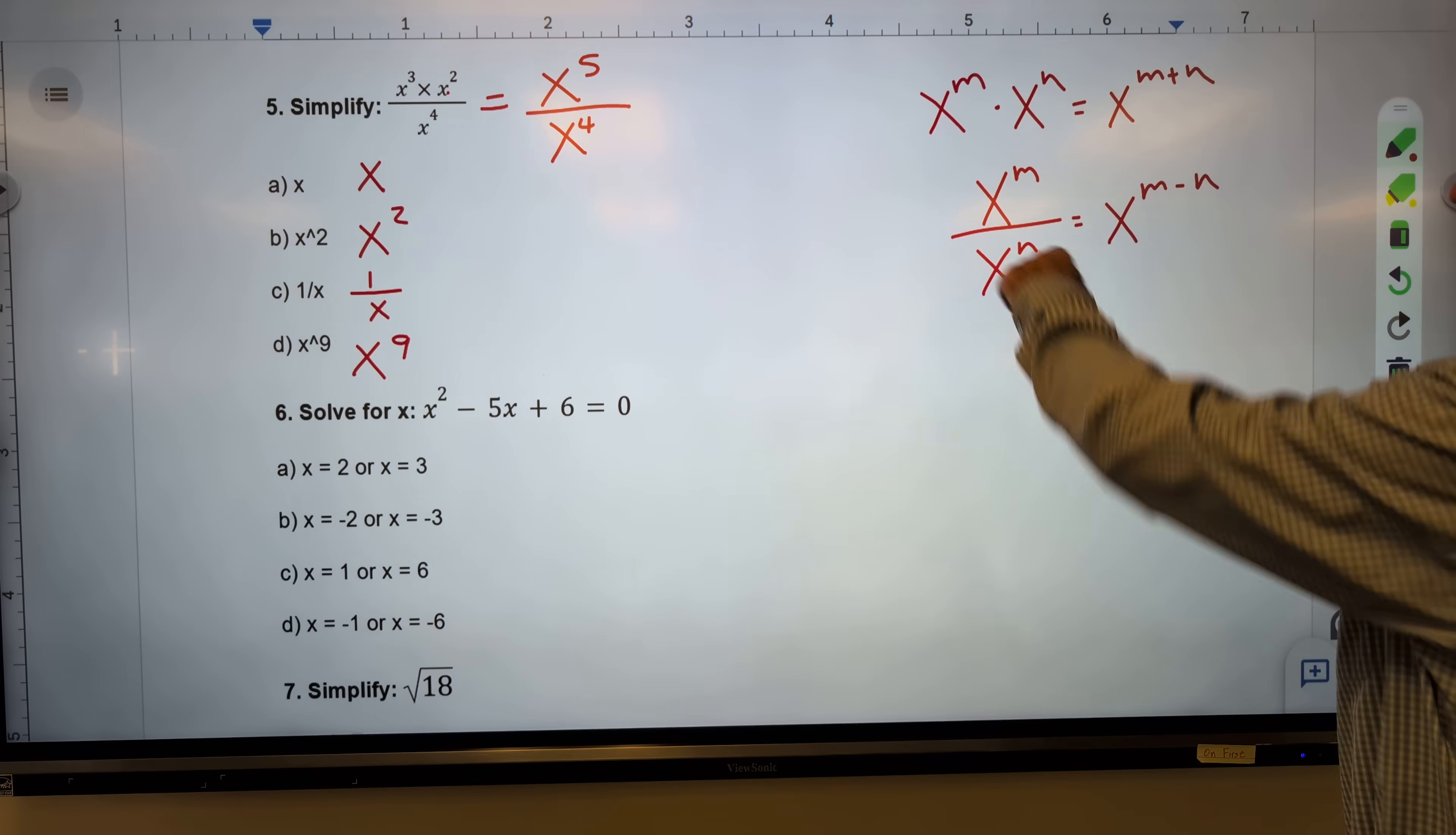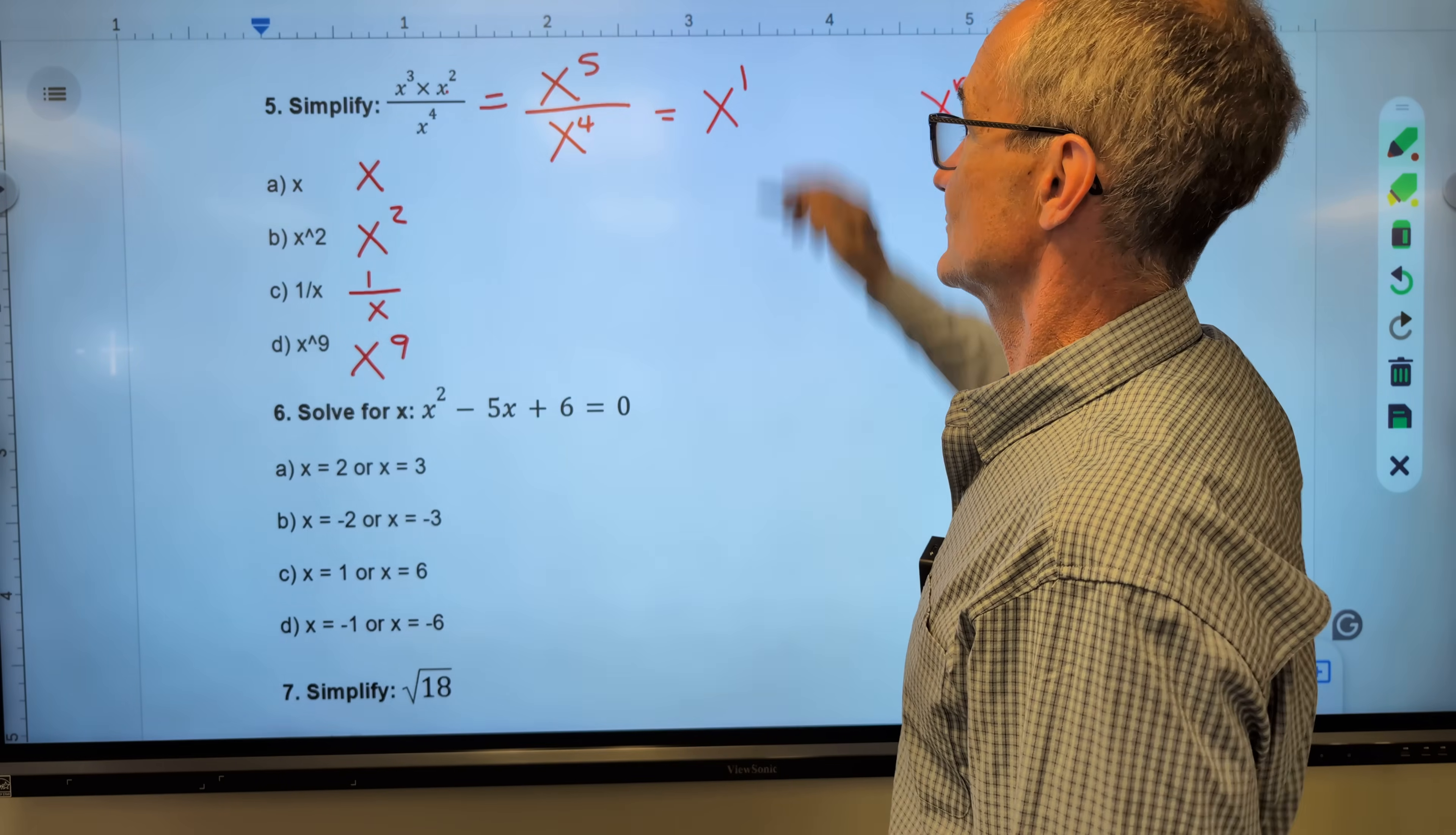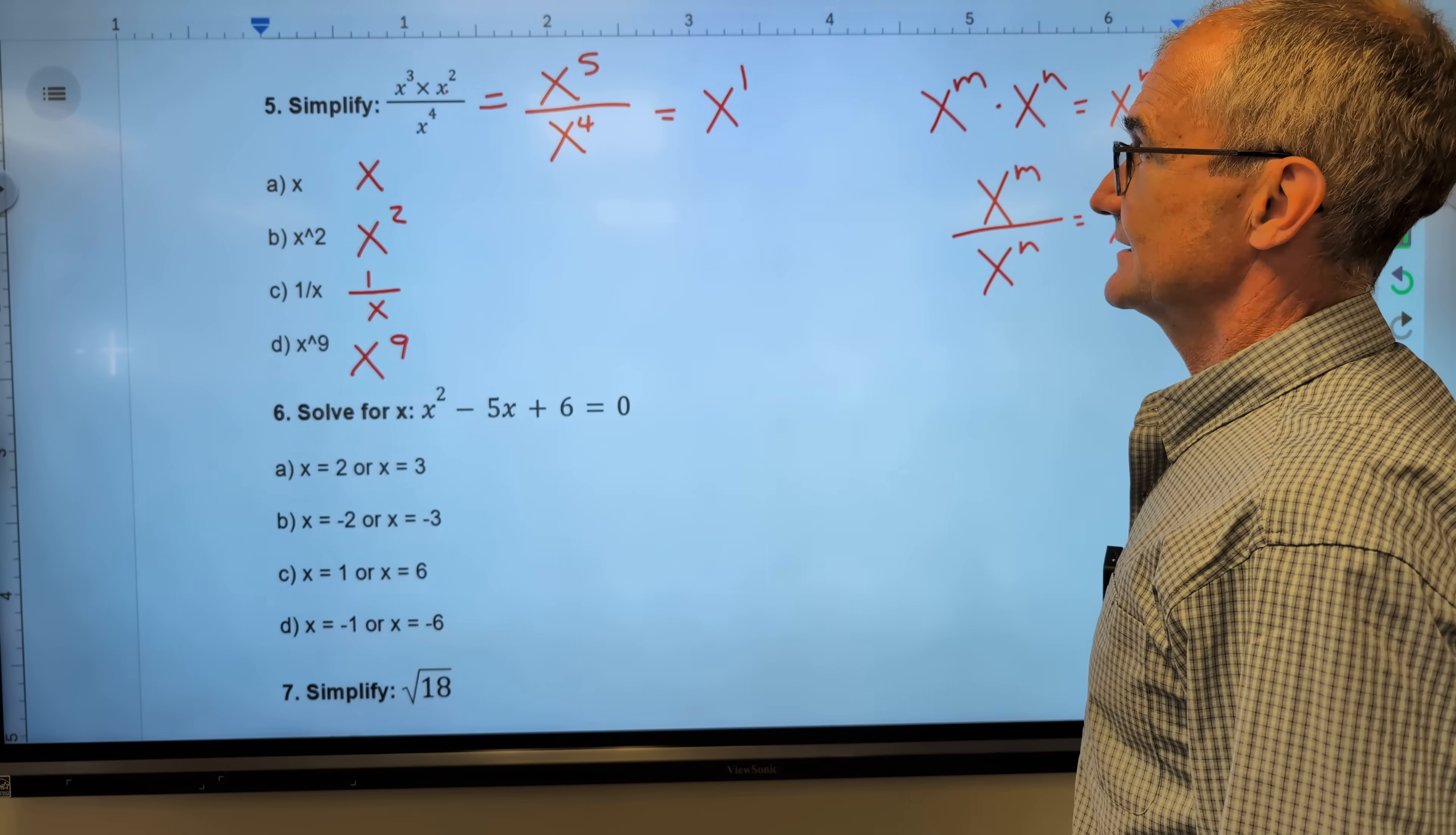This is called the base. That's the exponent. So I have the same bases. I stay with that base of x. 5 minus 4 is 1. x to the first and x are the same thing. So the correct answer, answer A right here.